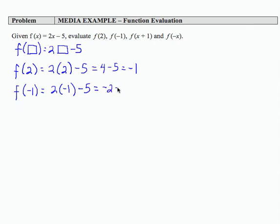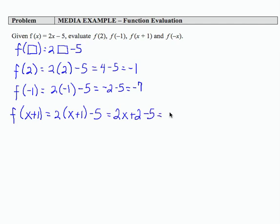If I evaluate using an input of x + 1, then x + 1 takes the place of the square. I'm going to use parentheses, and then I subtract 5. So that becomes 2x + 2 - 5 or 2x - 3 in our simplified form.